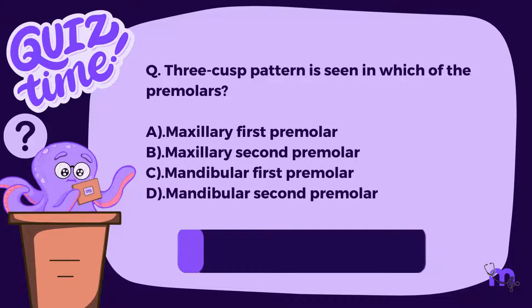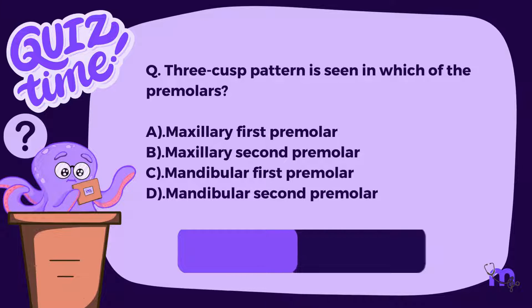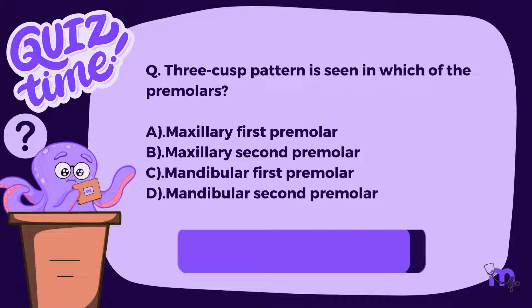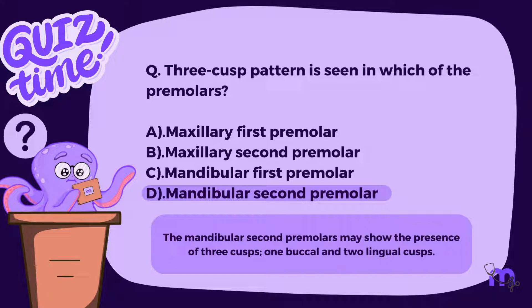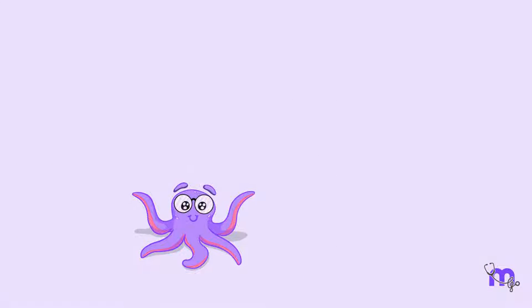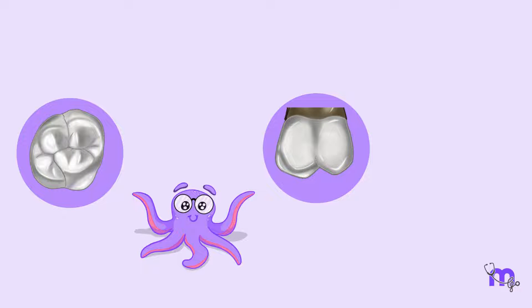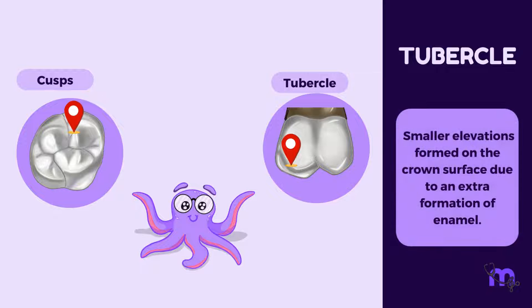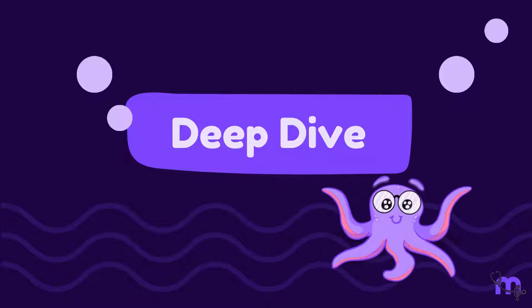In the intricate landscape of dental anatomy, we encounter not only the grand elevations like cusps, but also the smaller yet equally significant elevations known as the tubercles. Tubercles are smaller elevations formed on the crown surface due to an extra formation of enamel. Let us try to answer another question.